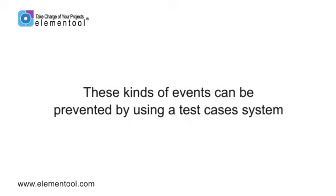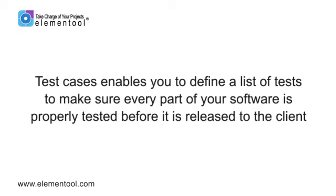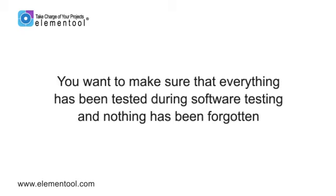These kinds of events can be prevented by using a test case system. A test case system is the backbone of the software testing process and enables you to define a list of tests to make sure every part of your software is properly tested before it's released to the client. You don't want to leave anything to chance. Your team may be highly trained professionals, but we're all human, and humans sometimes forget things. You want to make sure that everything has been tested and nothing has been forgotten.